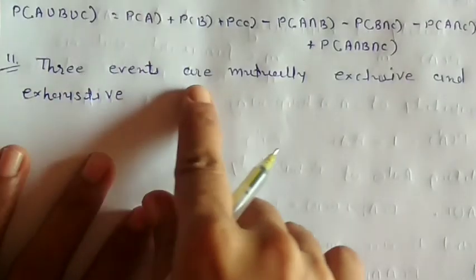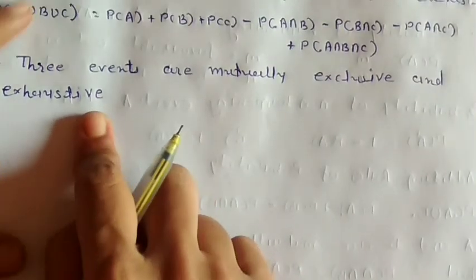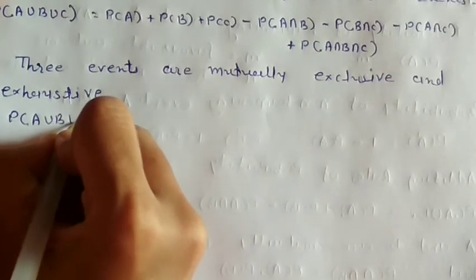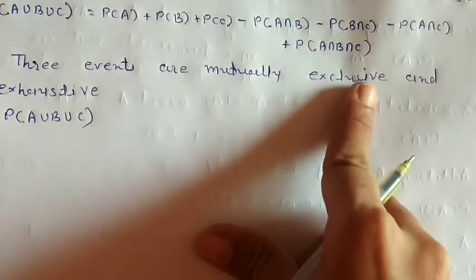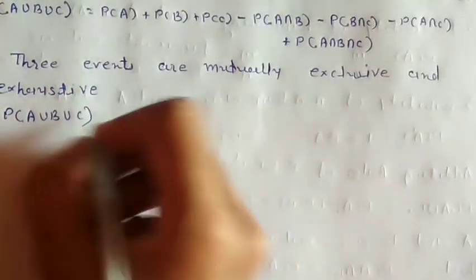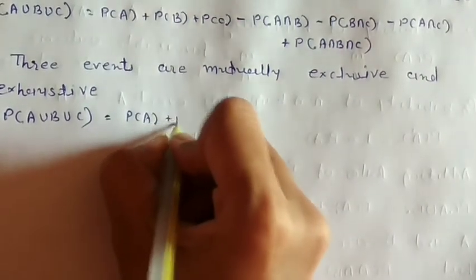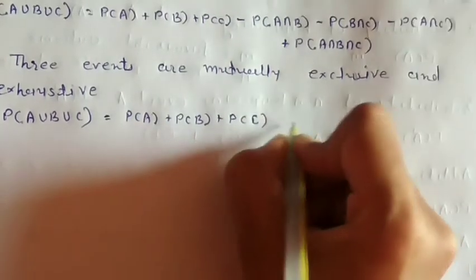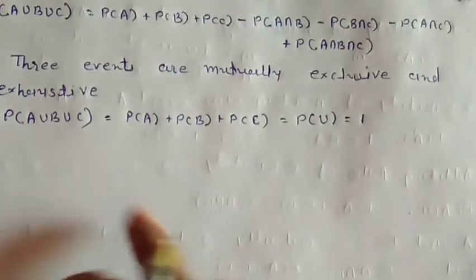Number 11: If three events A, B, and C are mutually exclusive and exhaustive, then P(A∪B∪C) = P(A) + P(B) + P(C) = P(U) = 1.